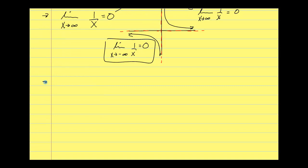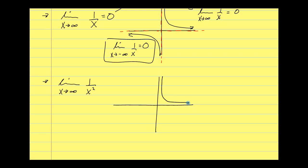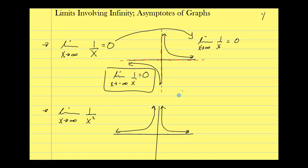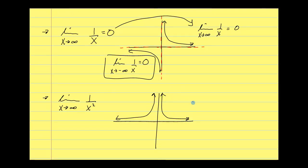Let's look at the limit as x approaches infinity of 1 over x squared. The graph is different but the idea is the same. With 1 over x squared, it hits the x-axis faster, and anything in the third quadrant pops up into the second quadrant because squaring makes negatives positive. As x approaches infinity, I'm really only interested in the first quadrant. My numerator is fixed, my denominator is increasing without bound, so my overall limit is going toward 0.